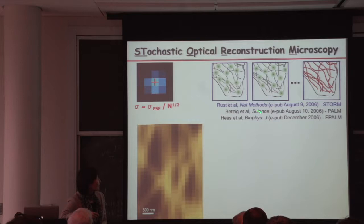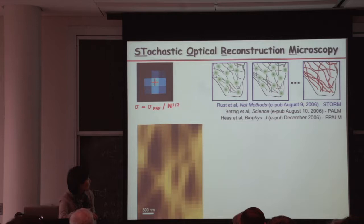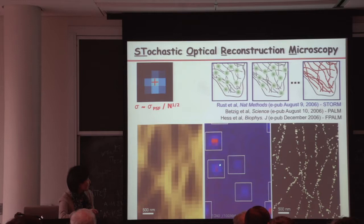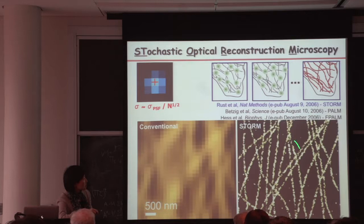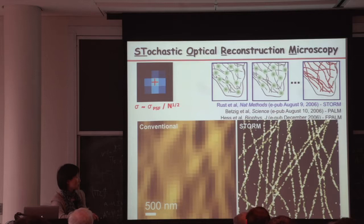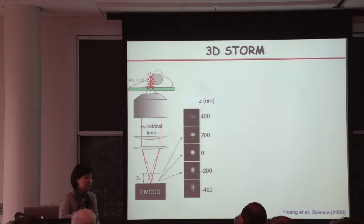Many of you know that independently, almost simultaneously, two other teams published related work: one by Eric Betzig, Harald Hess, and Jennifer Lippincott-Schwartz called PALM, and another by Samuel Hess's team called fPALM. Here is the application of STORM to microtubules inside a cell. You activate a subset at a time, pinpoint their center positions, and after enough accumulation of points, you get the STORM image. In comparison, you can see the conventional diffraction-limited image and immediately appreciate the substantial gain in resolution.